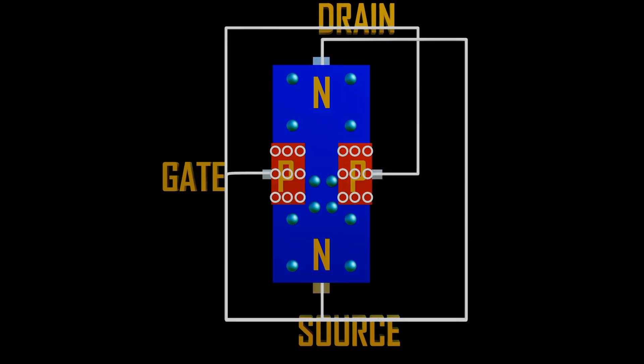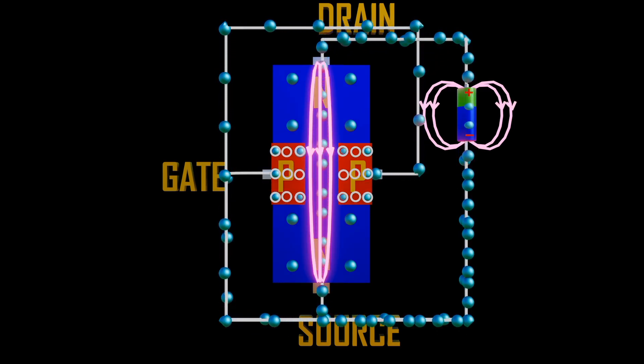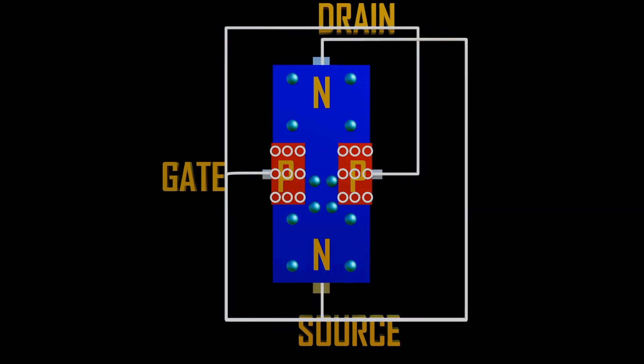When voltage is applied between drain and source, electrons enter through the source terminal and leave through the drain terminal. Hence an electric field is built within the channel, which facilitates current flow across the channel.